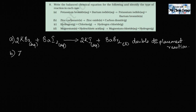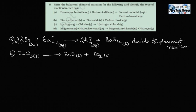The second reaction is zinc carbonate solid giving zinc oxide solid plus carbon dioxide gas. Let's count: zinc — one atom on each side, balanced. Carbon — one atom on each side, balanced. Oxygen — three on the left, one from zinc oxide plus two from carbon dioxide equals three on the right. This is already a balanced equation. Since a single component on the left breaks down into two components, this is a decomposition reaction.